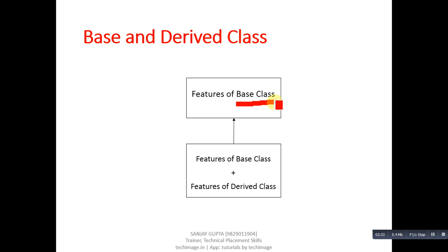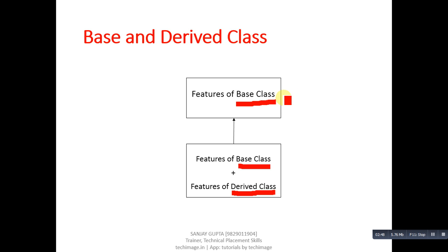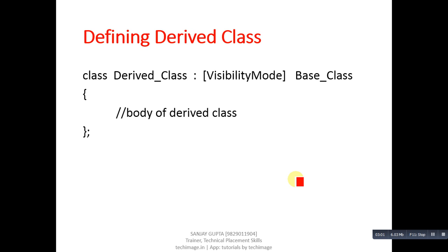We can understand this with the help of a pictorial diagram. First you implement the base class, then you inherit this base class into the derived class. In the derived class you have features of the base class as well as features of the derived class. The features of the base class can be used independently and also reused in the derived class.